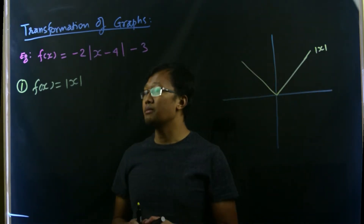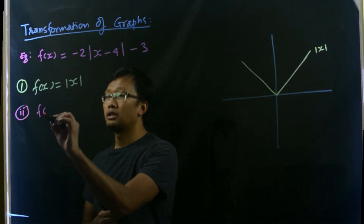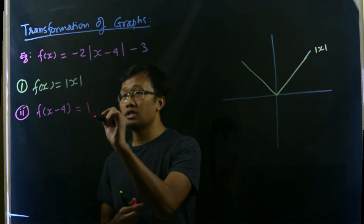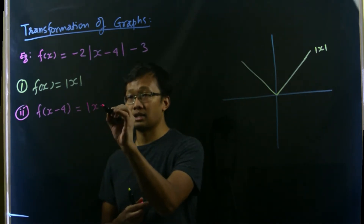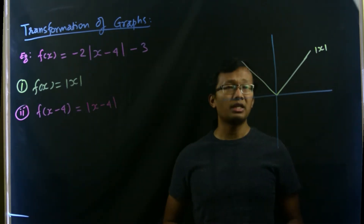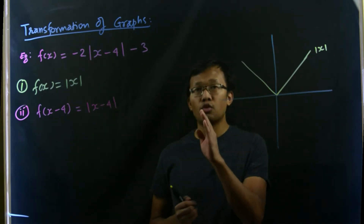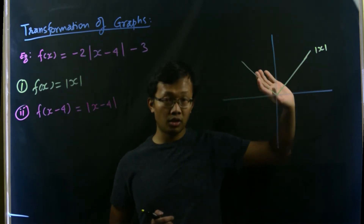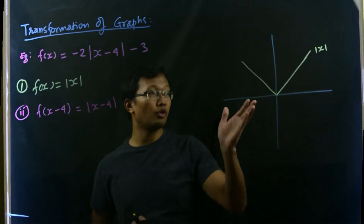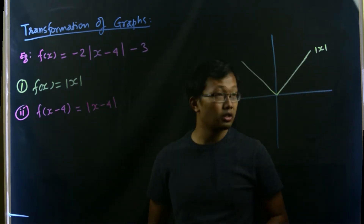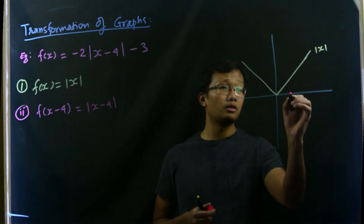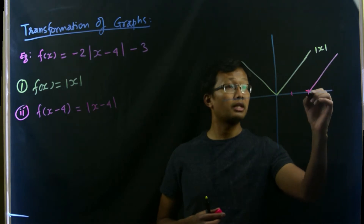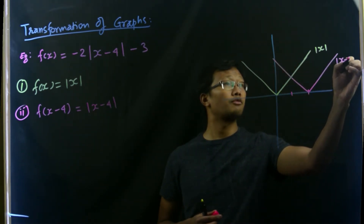In the second step we use x minus 4, subtracting 4 from x. Subtracting 4 from x means we shift the entire graph of the curve to the right by 4 units. So with a shift of 4 units to the right, this curve would look like the absolute value of x minus 4.